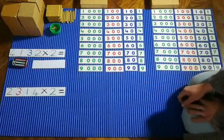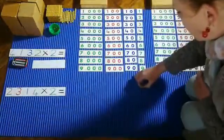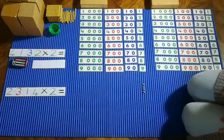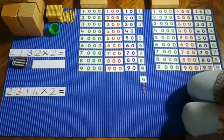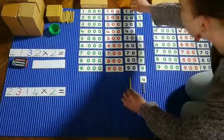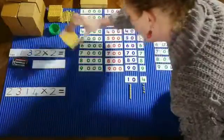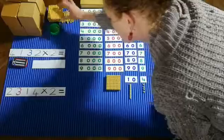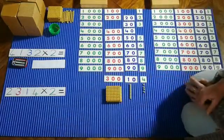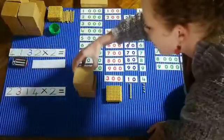I need 4 units. 1, 2, 3, 4 units. I need 1 ten. I need 3 hundreds. 1, 2, 3 hundreds. And I need two thousands. One thousand, two thousand.